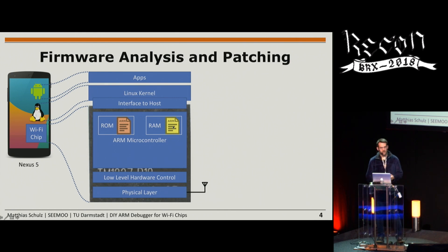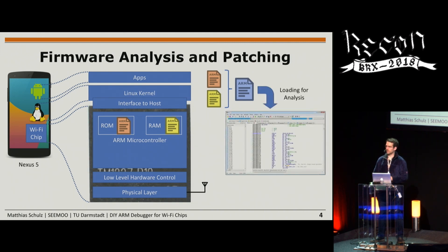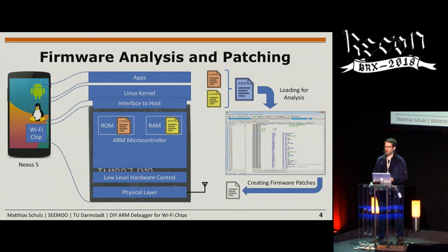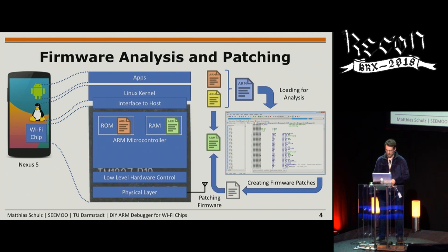The first step to understand what the Wi-Fi chip is doing is to extract the ROM firmware, take the RAM firmware, combine them, and analyze them in a disassembler or decompiler. Based on the analysis, you can figure out where functions are and what parameters they need. Then you create firmware patches, combine them with the original firmware file, and load the patched firmware into the Wi-Fi chip to run your own Wi-Fi firmware.